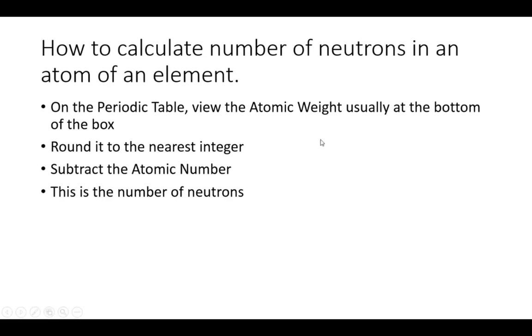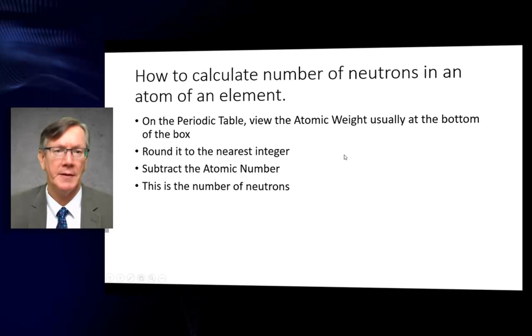How to calculate the number of neutrons in an atom of an element. On the periodic table, view the atomic weight, usually at the bottom of the box. Round it to the nearest integer. Subtract the atomic number. This is the number of neutrons.